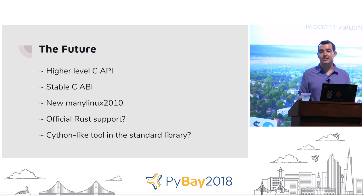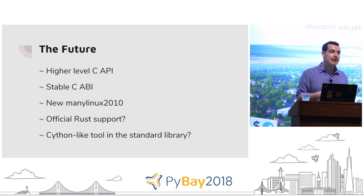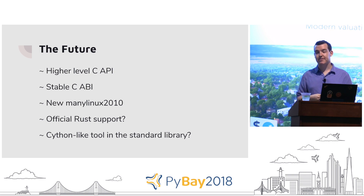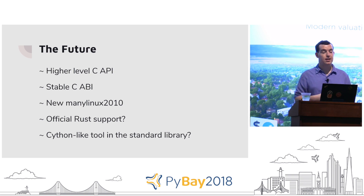Why am I not saying to just use the stable ABI right now? It's a little complicated to use and not many people target it. But hopefully, with a higher-level C API, it could become easier to target the stable ABI, which makes your job of shipping a library a lot easier.